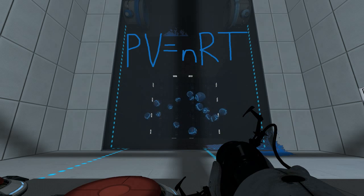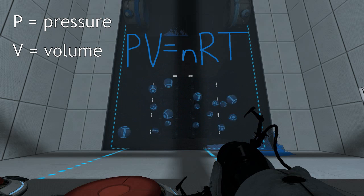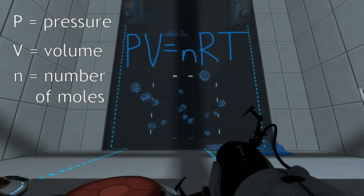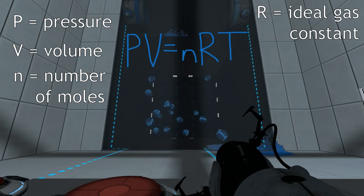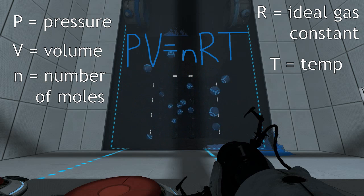The ideal gas law says that PV equals nRT, where P is pressure, V is volume, N is the number of moles in a substance, R is the ideal gas constant, and T is temperature.